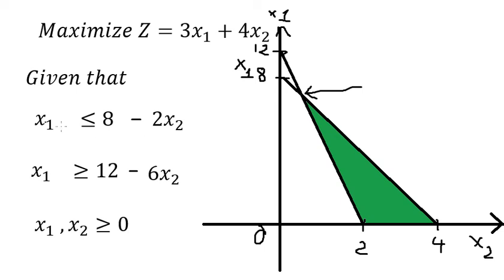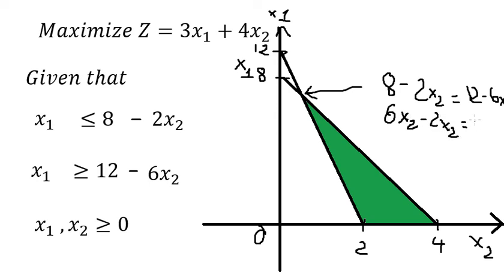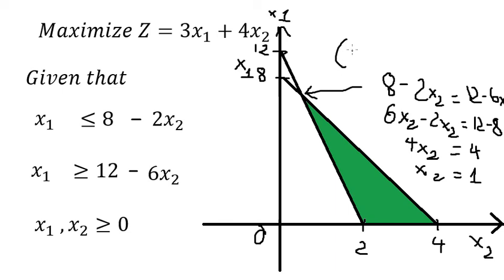To find the intersection, we set the two equations equal: 8 minus 2S2 equals 12 minus 6S2. Moving terms, we have 4S2 equals 4, so S2 equals 1. Substituting back, we get S1 equals 6.